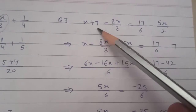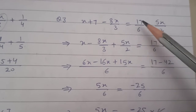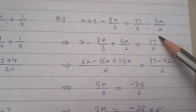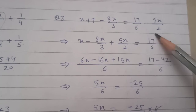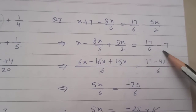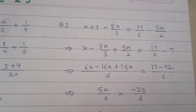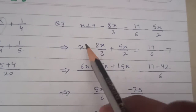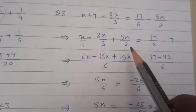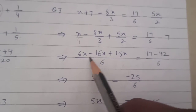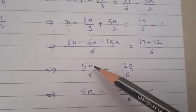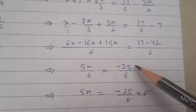Next: x plus 7 minus 8x upon 3 is equal to 17 upon x minus 5, x upon 2. Now take the x terms to one side, and bring plus 7 to the other side where it becomes minus 7. Then take LCM of 1, 3, and 2, and solve. It comes to 5x upon 6 on the left side.